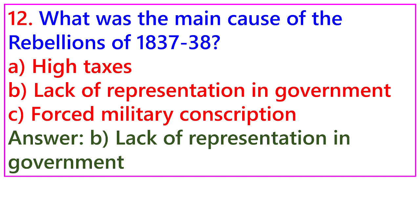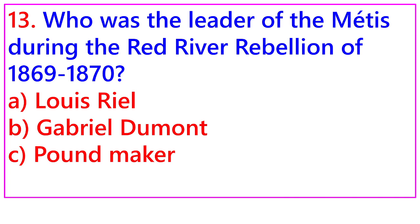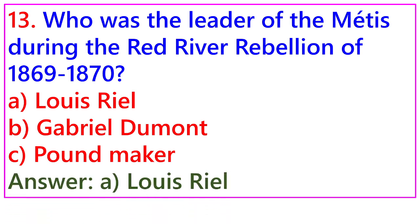Question 13: Who was the leader of the Métis during the Red River Rebellion of 1869-1870? A. Louis Riel, B. Gabriel Dumont, C. Poundmaker. Answer: A. Louis Riel.